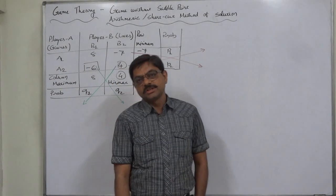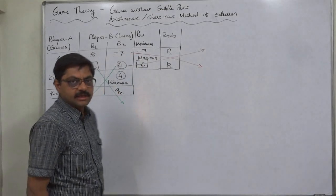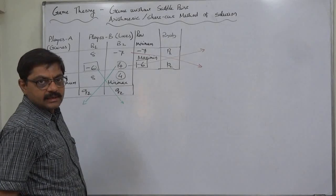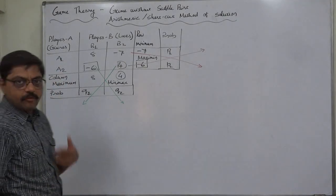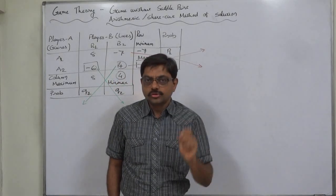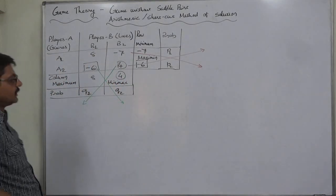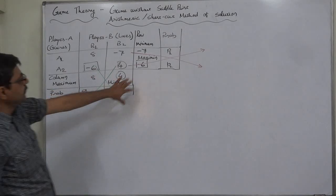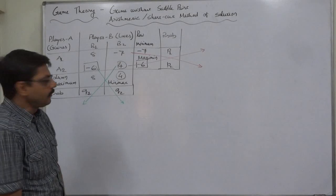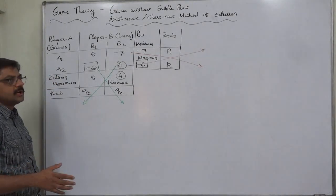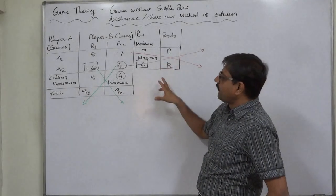Hello and welcome. Operations research — game theory, game without saddle point. We are discussing the methods of solving a game without saddle point, and now it is the turn of the arithmetic method or shortcut method. I have selected the same problem because I want you to compare the methods of solution by solving the same problem through different methods. In this game, the maximin is minus 6 and the minimax is 4, so we can say the game has no saddle point. The players need to use mixed strategies, and we need to find out the probabilities of the players using different strategies.